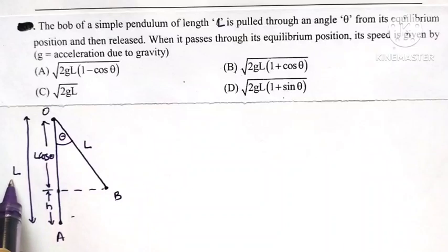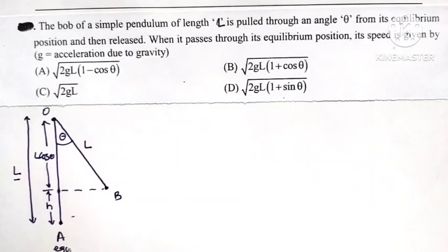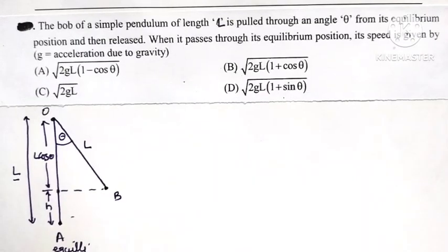OA is the length of the pendulum with a bob at the end. A represents the equilibrium position of the simple pendulum.